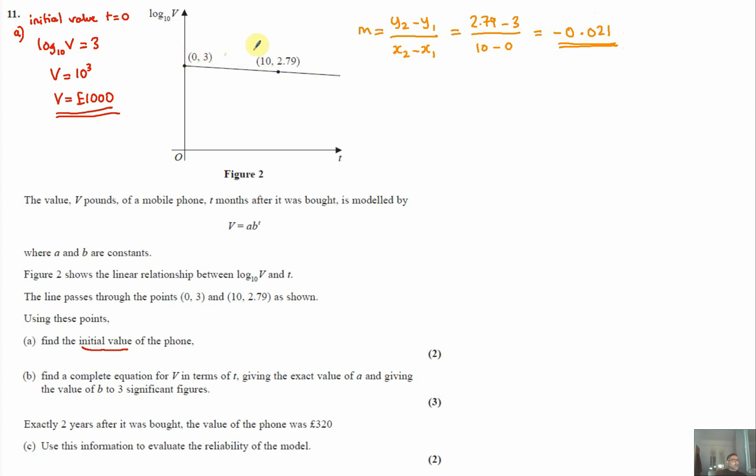So rewriting this as a straight line, we know the y intercept is 3. So therefore log to base 10 V, which is our y value in this case, is equal to minus 0.021 t, the gradient times t, plus our y intercept which is 3.